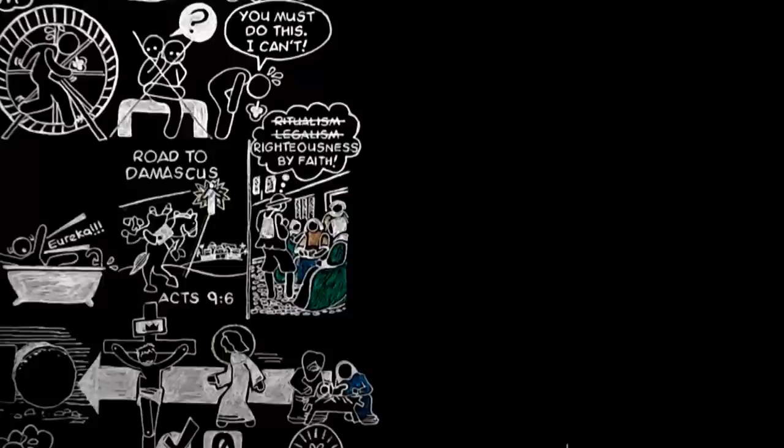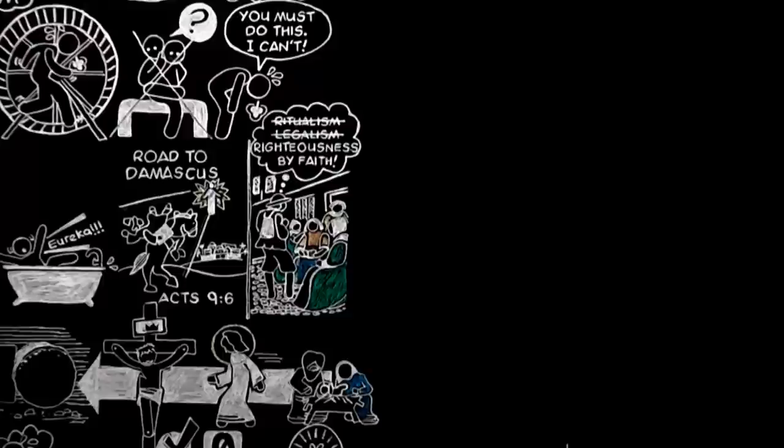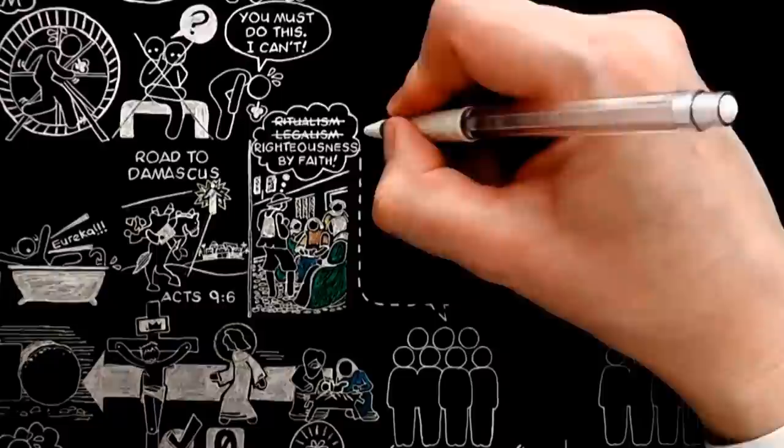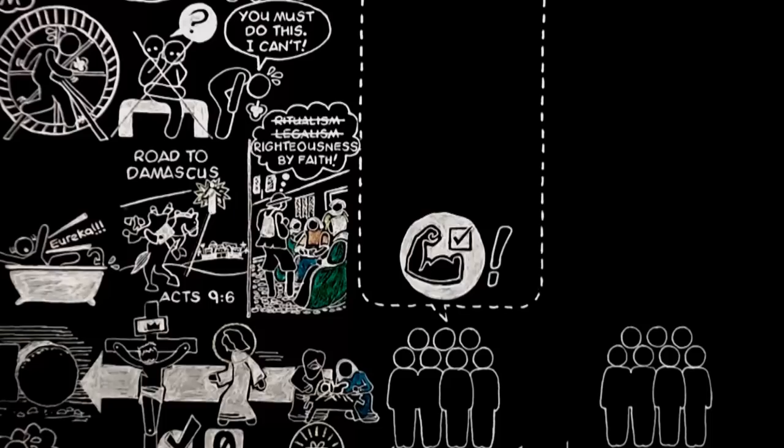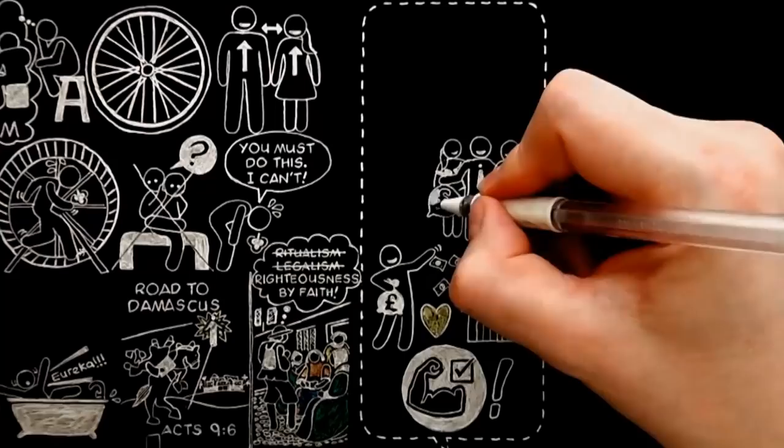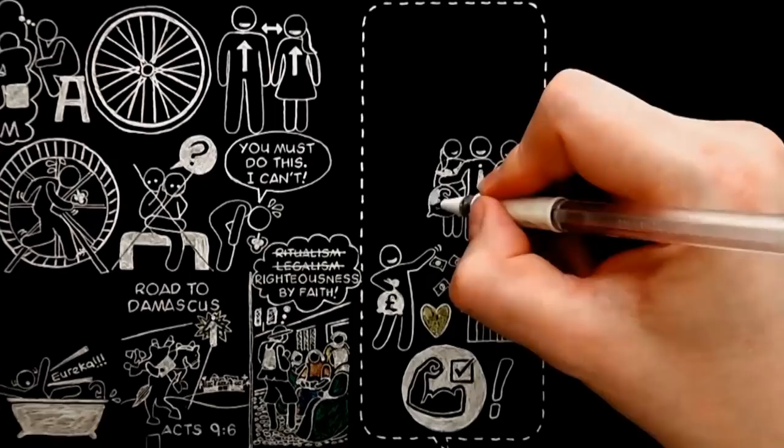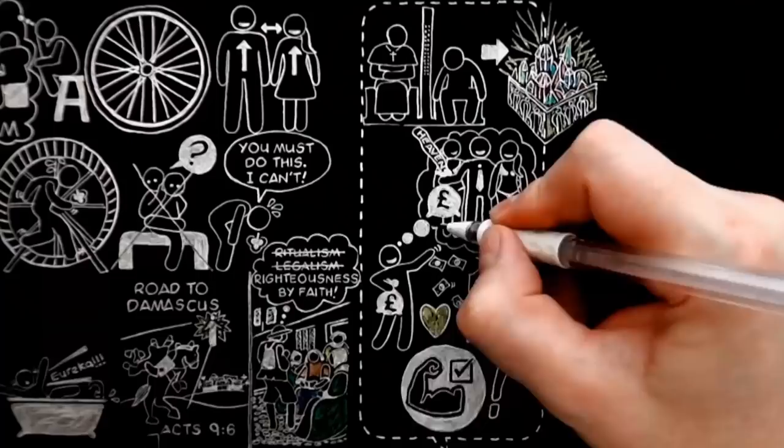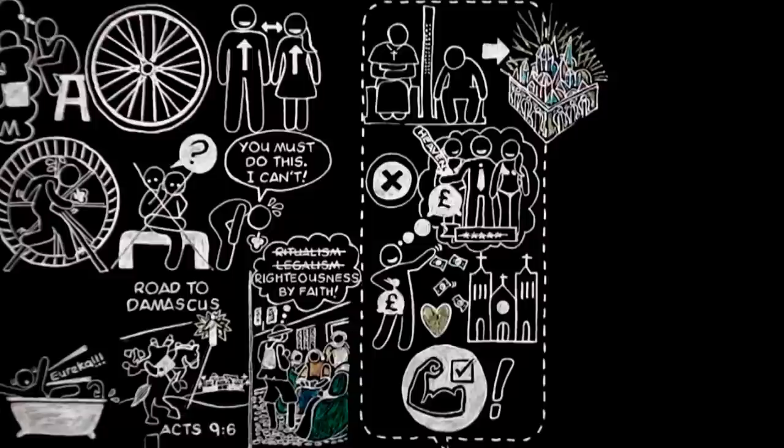There are two parodies of the truth which different sets of Christians have in the past been accused by other Christians of believing. Perhaps they make the truth clearer. One set were accused of saying, Good actions are all that matters. The best good action is charity. The best kind of charity is giving money. The best thing to give money to is the church. So hand us over ten thousand pounds and we will see you through. The answer to that nonsense, of course, would be that good actions done for that motive, done with the idea that heaven can be bought, would not be good actions at all, but only commercial speculations.